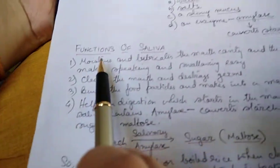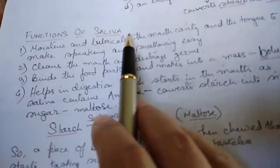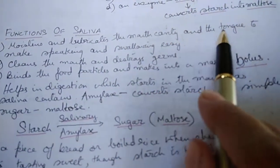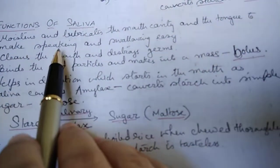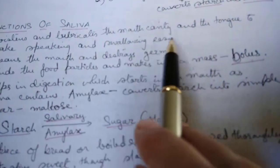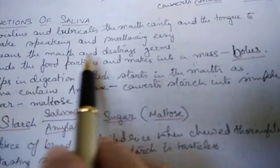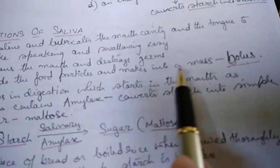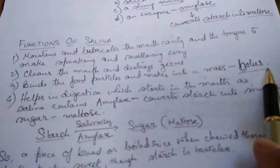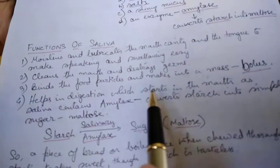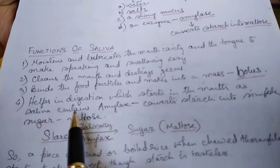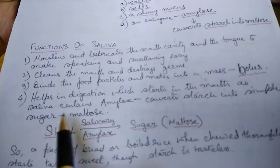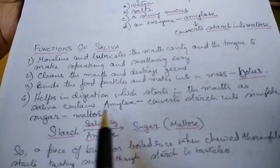Saliva is a fluid containing water, salt, slimy mucus, and an enzyme called amylase, which converts starch into maltose. The functions of saliva are: it moistens and lubricates the mouth cavity and the tongue to make speaking and swallowing easy, it cleans the mouth and destroys germs, and it binds food particles into a mass called bolus.